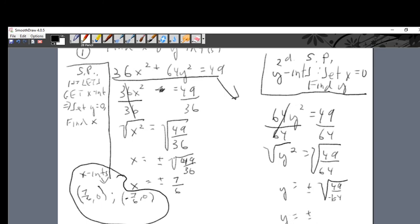You get y is equal to plus or minus - as soon as you take the square root you got two roots - of 49 over 64. Take the square root of 49, you'll get 7, plus or minus. And the square root of 64, you're going to get 8. Here's our two y-intercepts: (0, 7/8) and (0, -7/8). That's the second one.